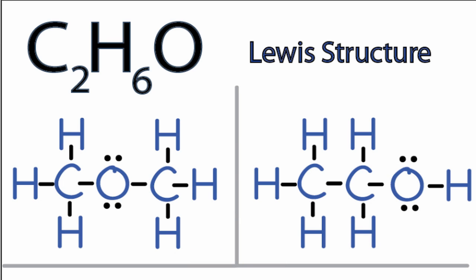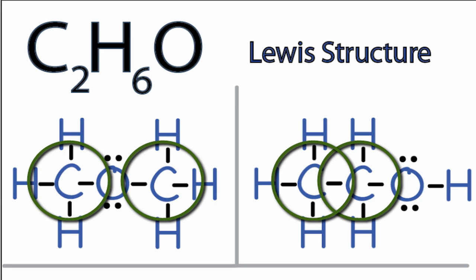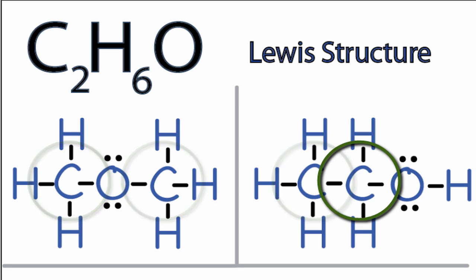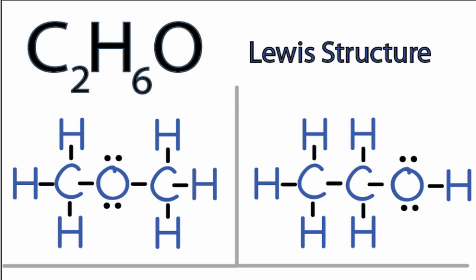If you look at each of the Lewis structures, you can see the carbons have eight valence electrons so their octets are full, and the oxygens also have eight valence electrons so they have their outer shell full as well. The hydrogens all have two valence electrons, and that's all they need to have a full outer shell. So these are two potential Lewis structures for C2H6O.